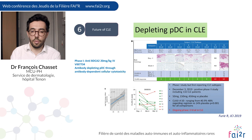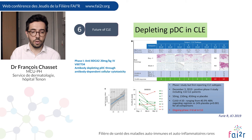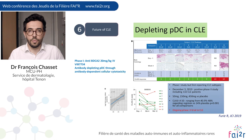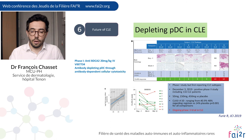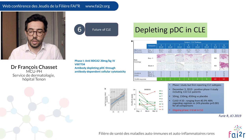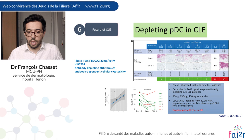I think one of the most promising strategies is depleting plasmacytoid dendritic cells in CLE. The data from a phase 1 trial of an anti-BDCA2 antibody published in JCI in 2019 showed that depleting PDCs is associated with reduced PDC presence in the skin, a reduced interferon score, and CLASI improvement. Moreover, an abstract published last year at the American College of Rheumatology showed that in a phase 2 study involving 132 CLE patients, this treatment was associated with significant CLASI activity reduction compared with placebo. A phase 3 trial will be started soon, and I think it will be very promising.